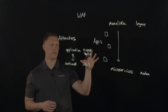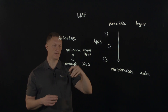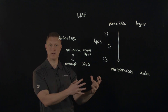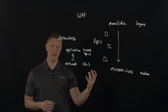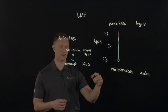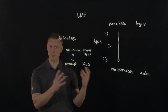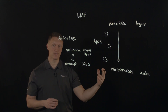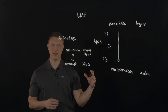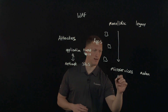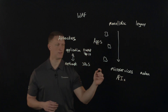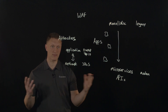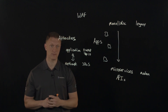A quick statistic: some surveys found that nearly 85% of all new workloads deployed are deployed in containers in a microservices-type architecture — things like Kubernetes. Also, over 80% of all internet traffic today is API calls. So if 80-plus percent of all internet traffic is API calls, you need to think about how you're going to secure those APIs.